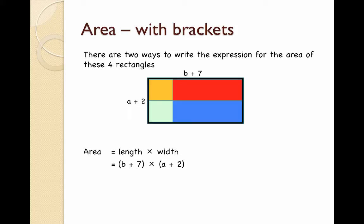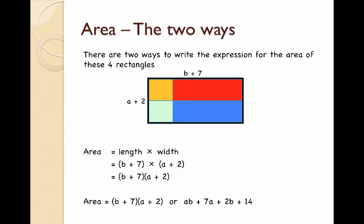My length is B plus 7 and I multiply it by my width which is A plus 2. I just get rid of the multiplication symbol and write those two brackets next to each other. So the two ways to write the area are with brackets which is B plus 7 times A plus 2, or without brackets which is AB plus 7A plus 2B plus 14.